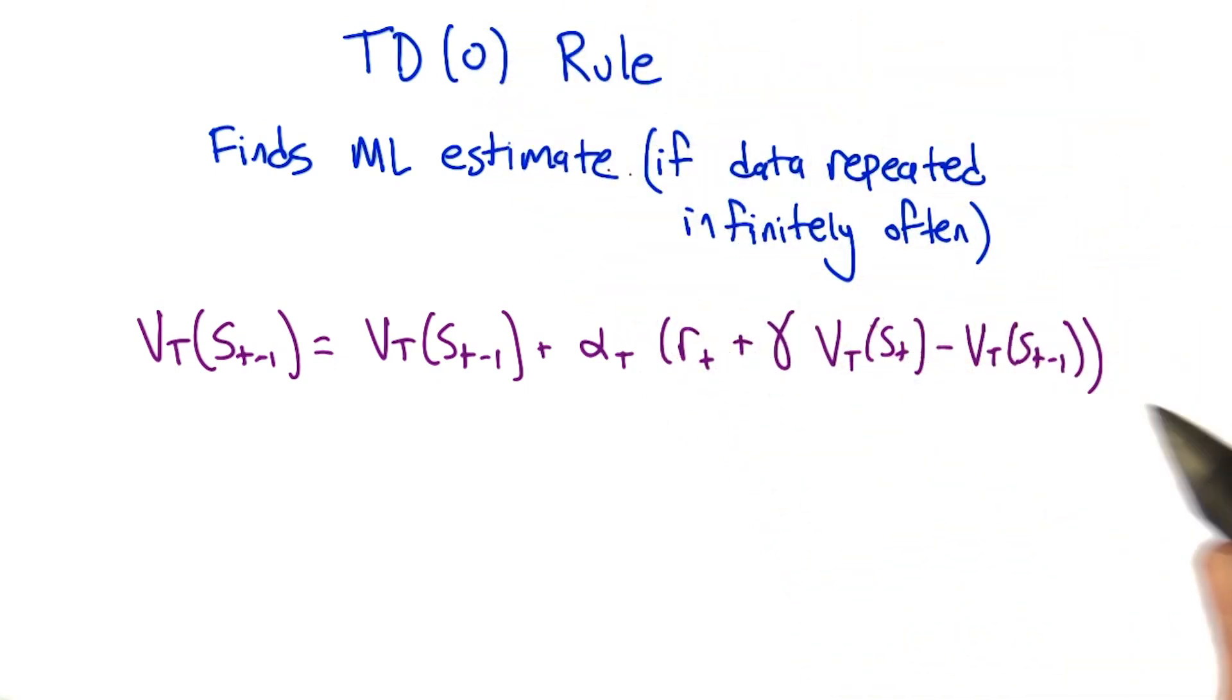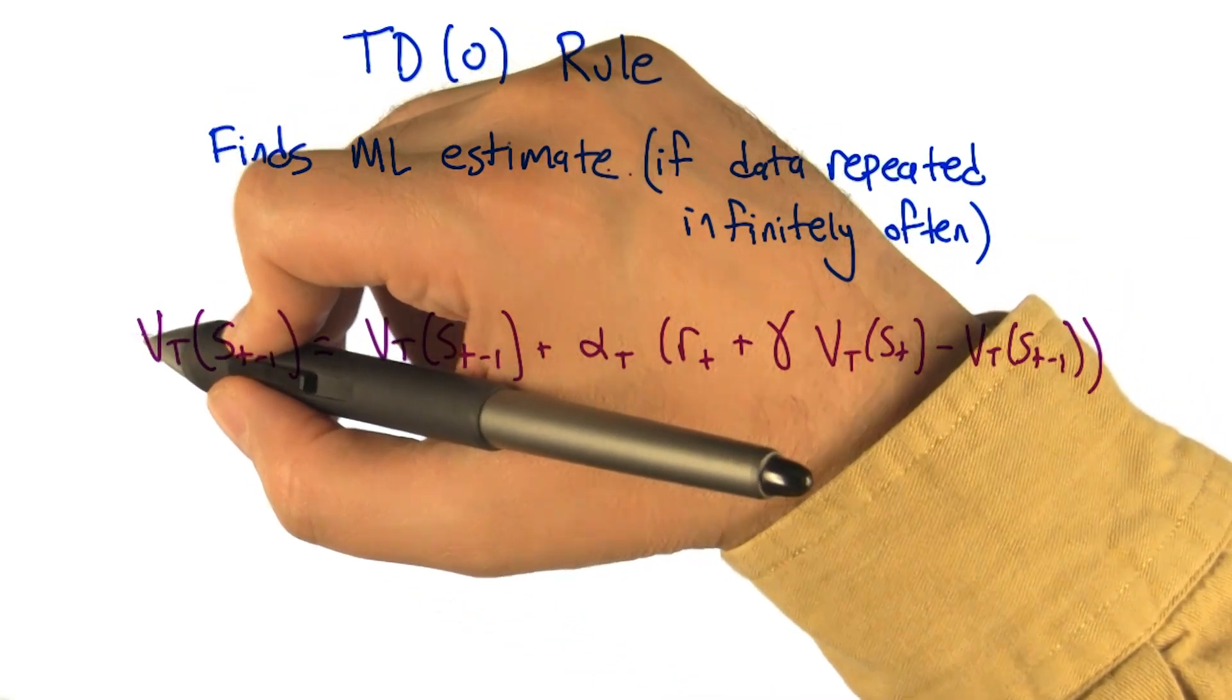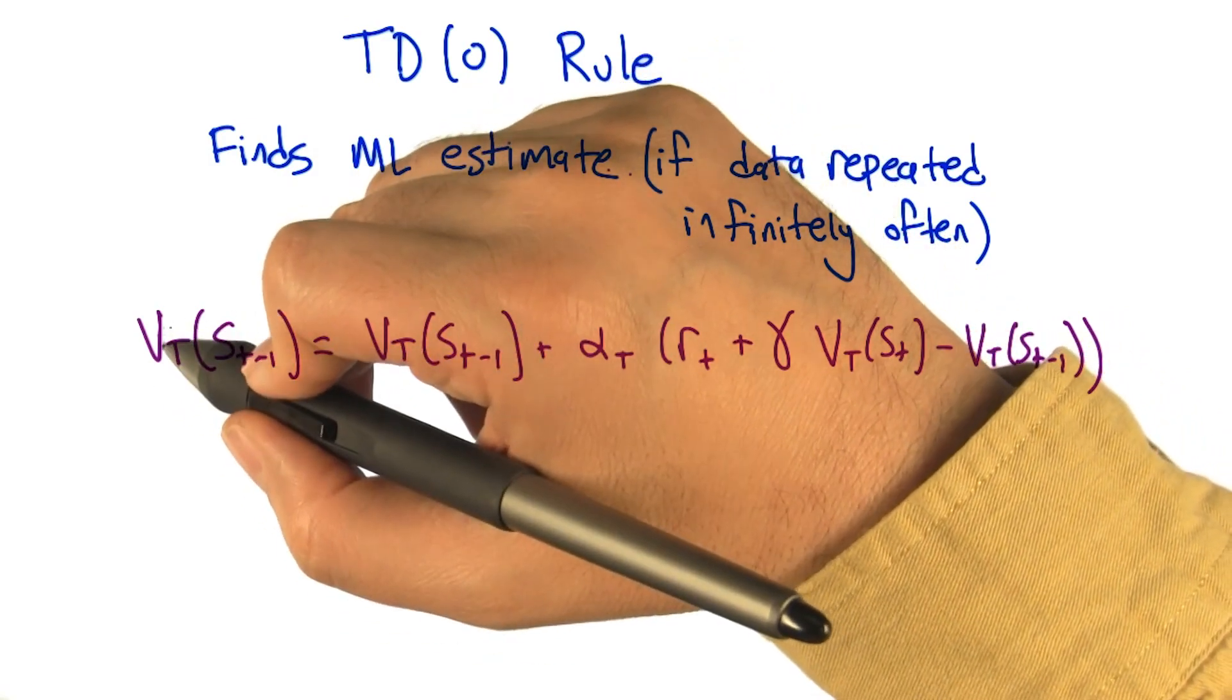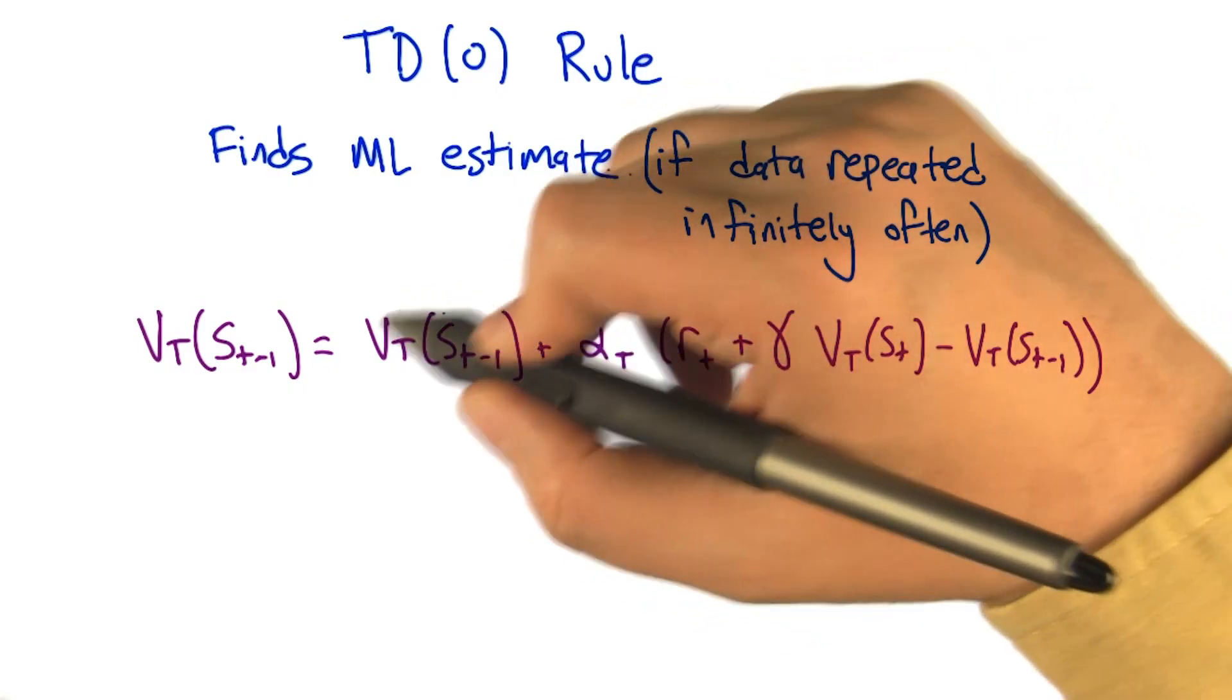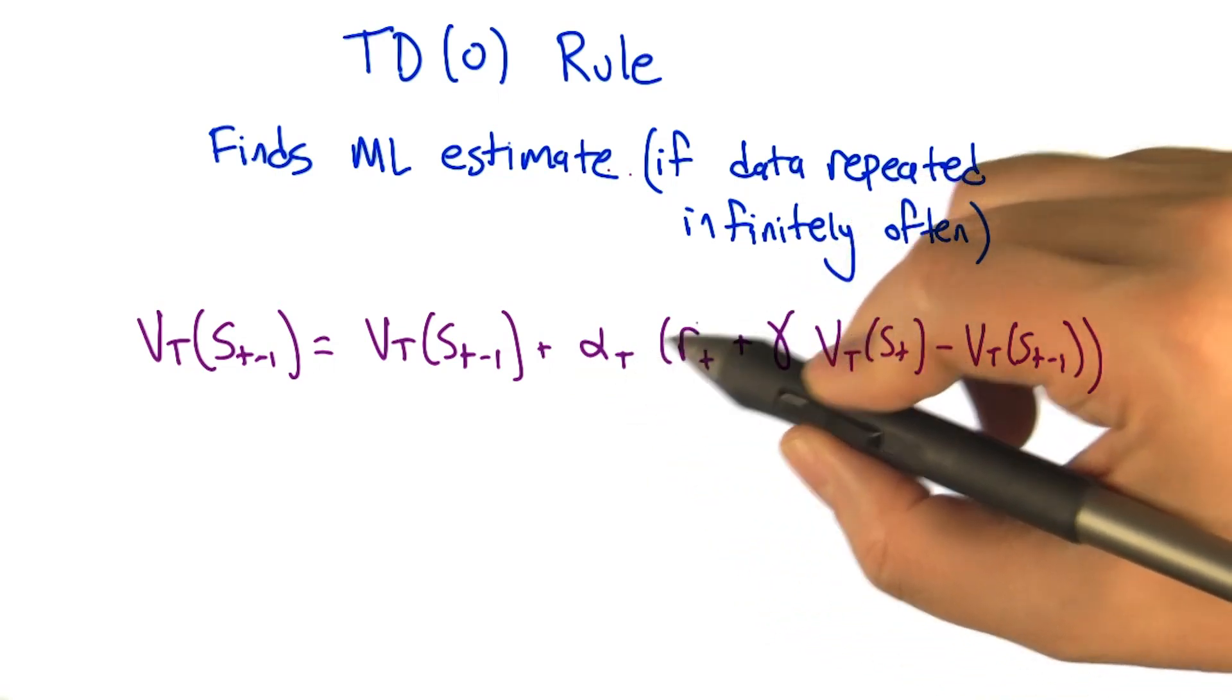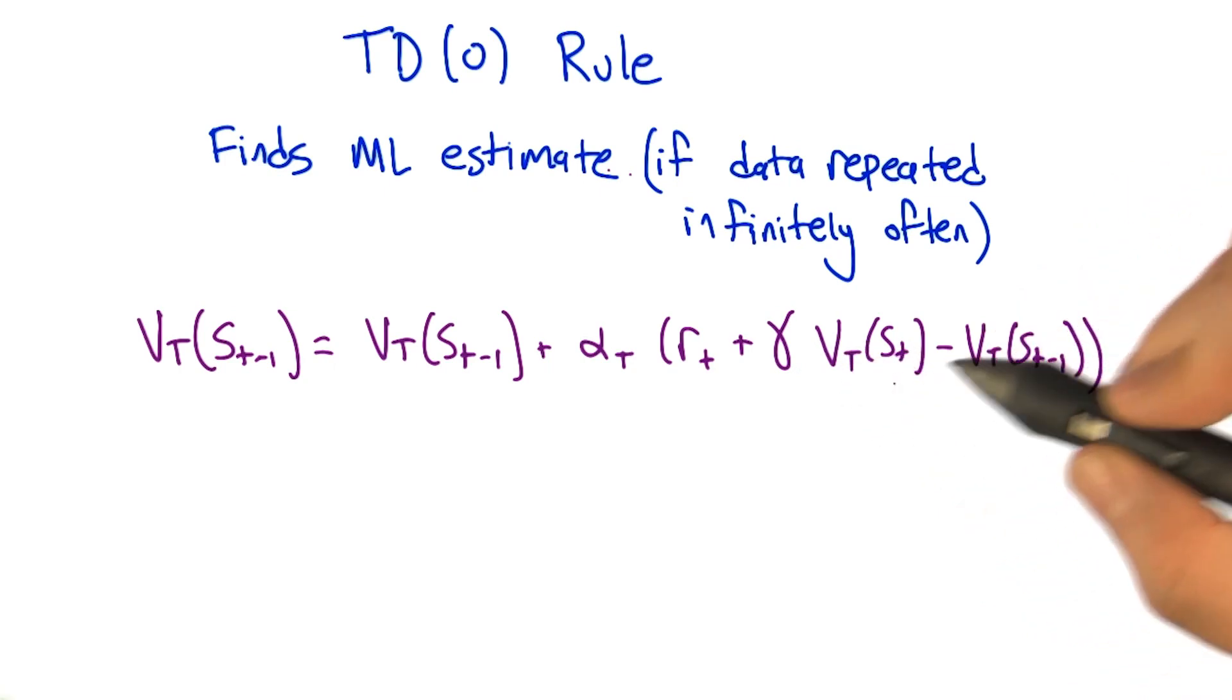And the rule looks like this, not so unfamiliar looking, that the way we're going to compute our value estimate for the state that we just left when we make a transition at epoch t, for trajectory t, big T, is what the previous value was. Plus, we're going to move a little bit in the direction with our learning rate toward what? Toward the reward that we observed, plus the discounted estimated value of the state that we ended up in, minus the estimated value of the state that we just left.